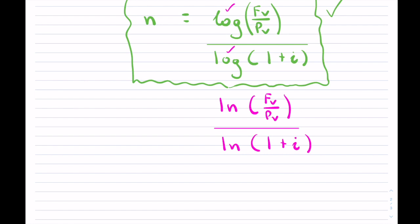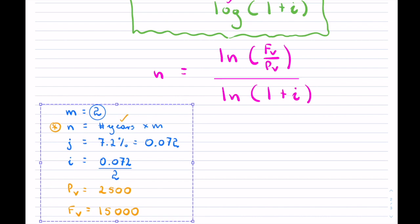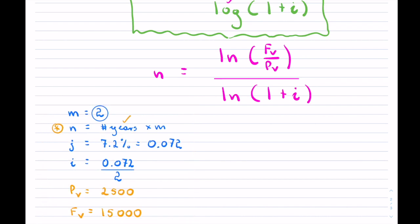For this example, let me copy down our information so I can use it. We're solving for n — and in particular, the number of years. So we have: m = 2 (semi-annual), i = 0.072 / 2 = 0.036, PV = $2,500, FV = $15,000.